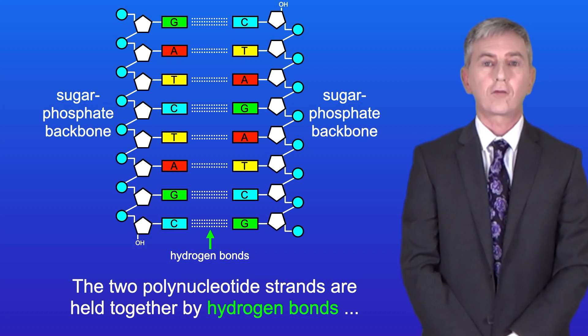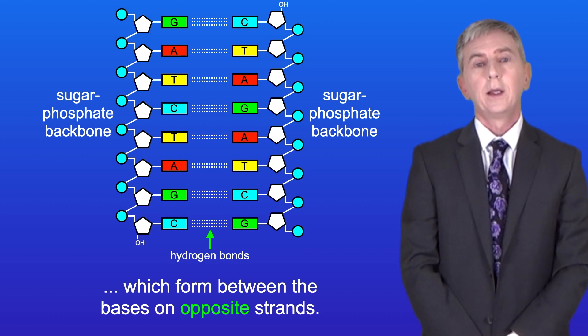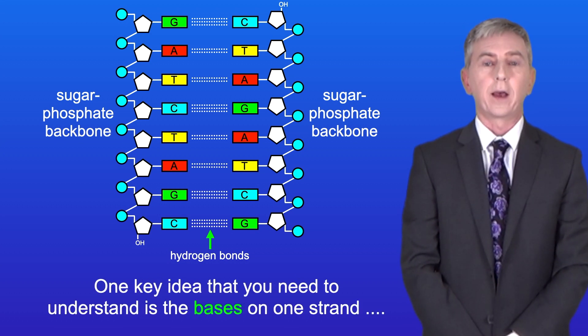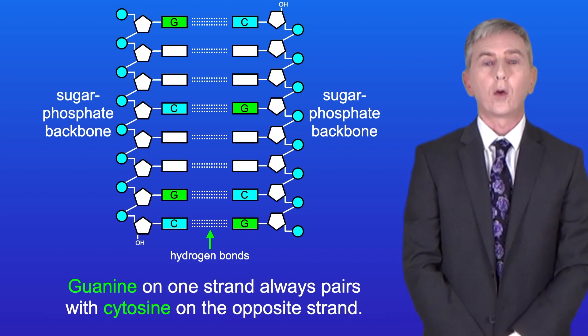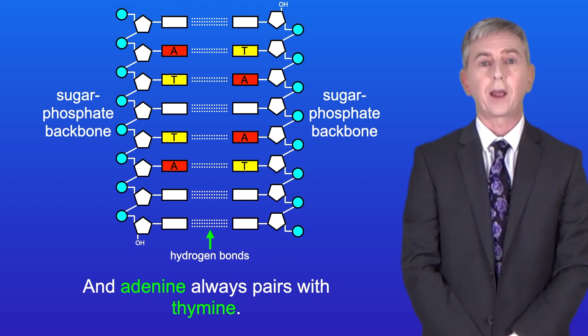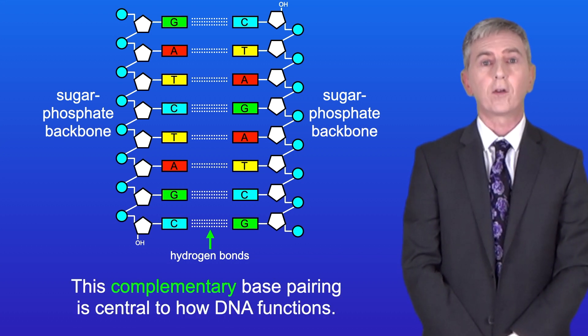The two polynucleotide strands are held together by hydrogen bonds which form between the bases on opposite strands. Now one key idea you need to understand is that the bases on one strand are complementary to the bases on the other strand. Guanine on one strand always pairs with cytosine on the opposite strand and adenine always pairs with thymine and this complementary base pairing is central to how DNA functions.